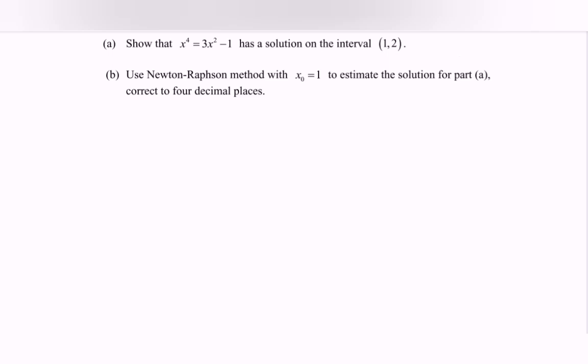Hello everyone, in this video I'm going to discuss an example for the Newton-Raphson method. The problem shows that x to the power of 4 equals 3x squared minus 1 has a solution on the interval 1 to 2.